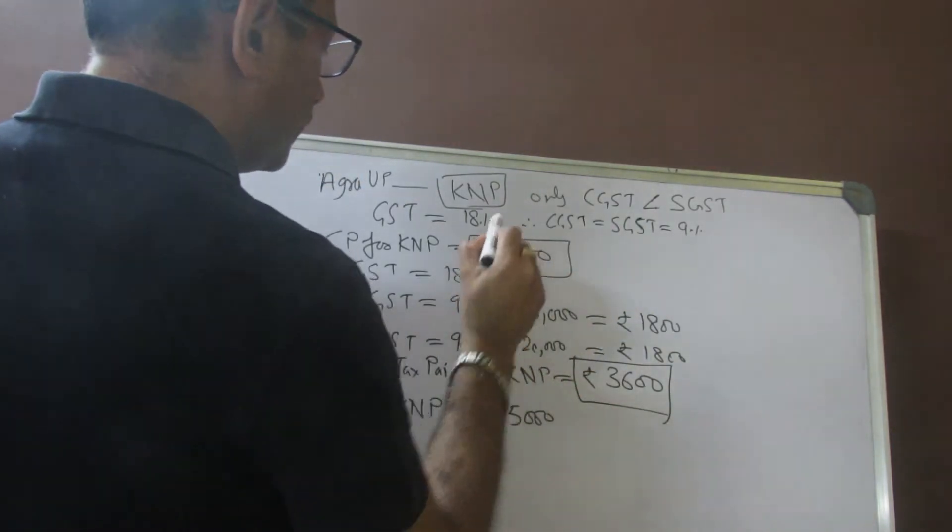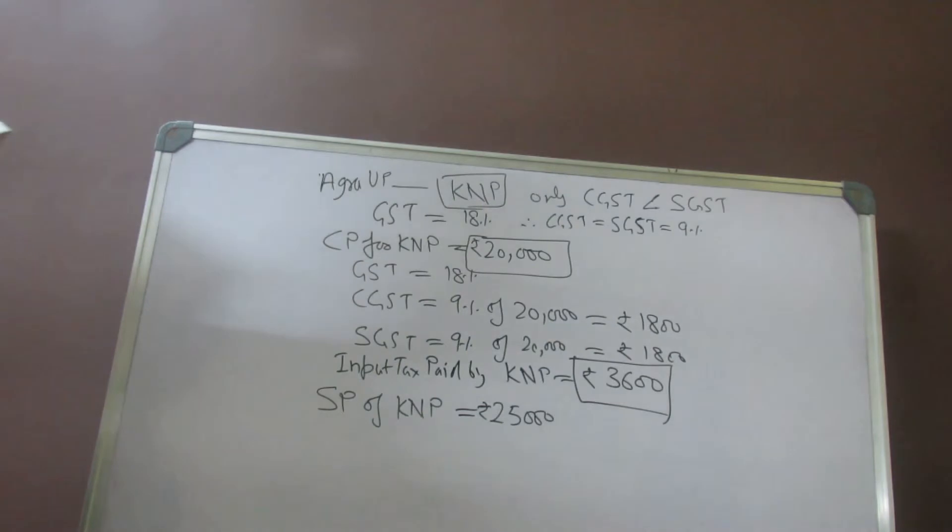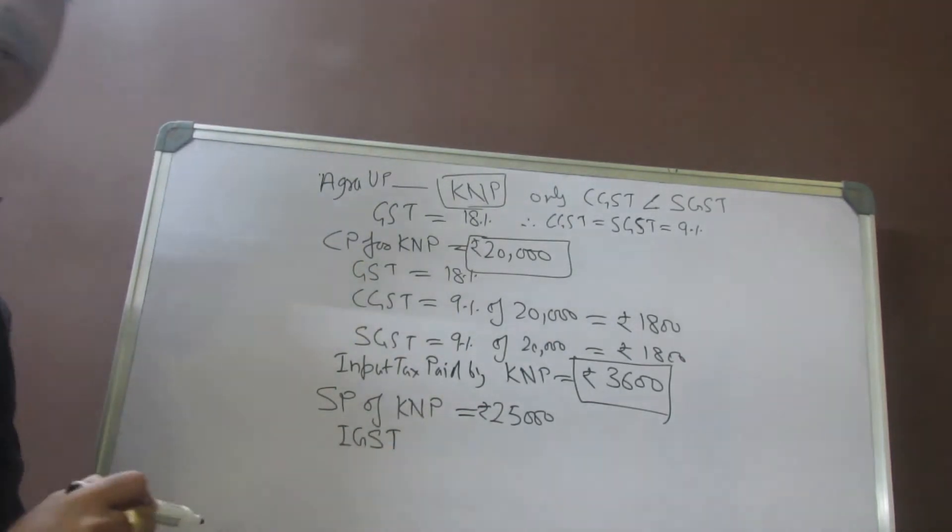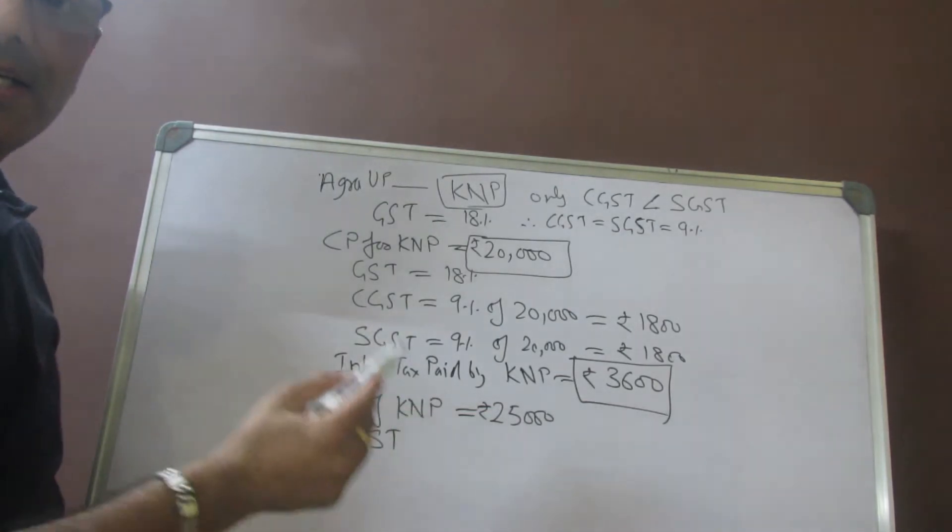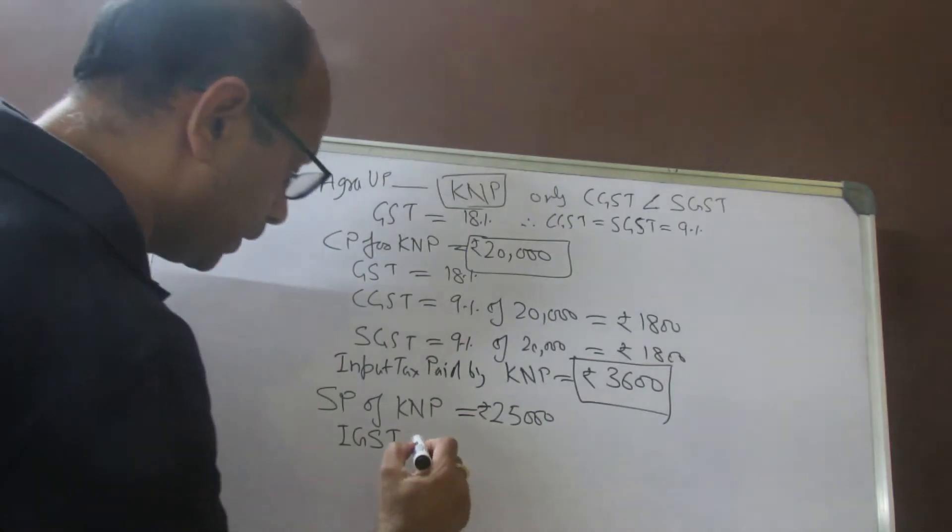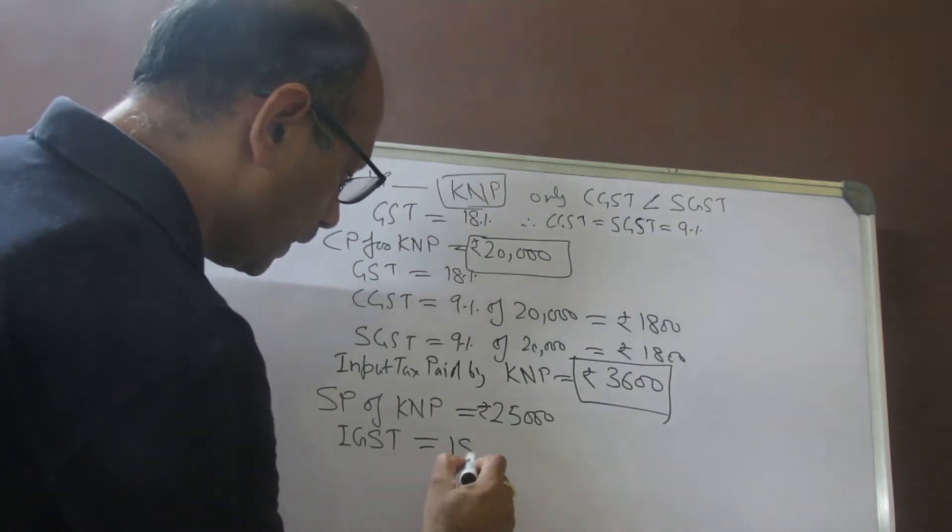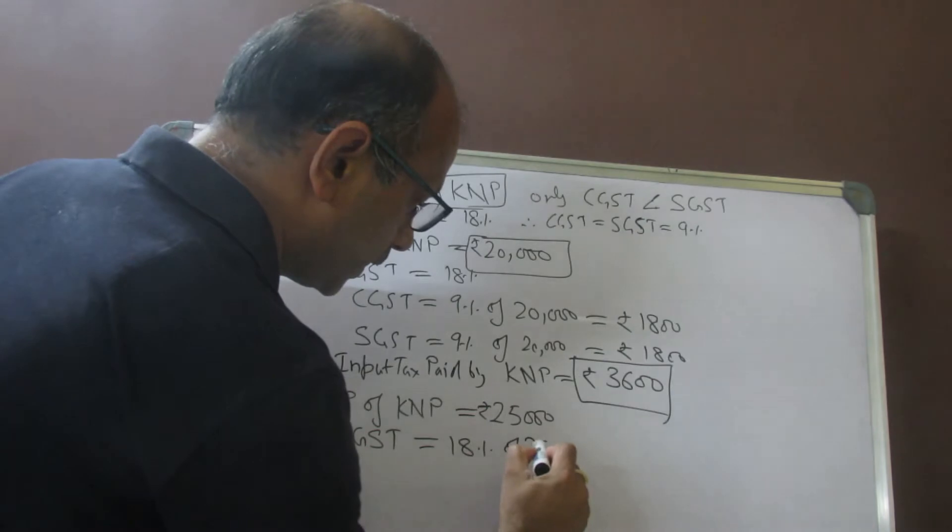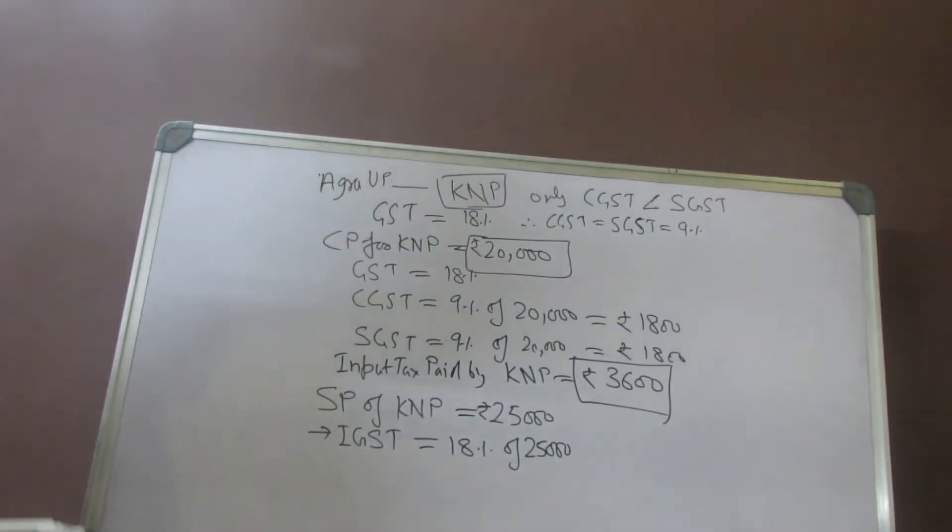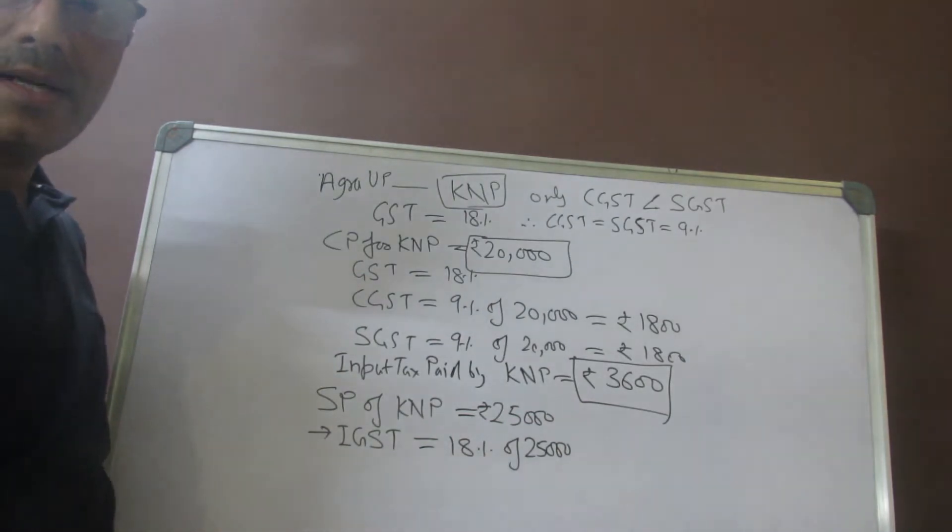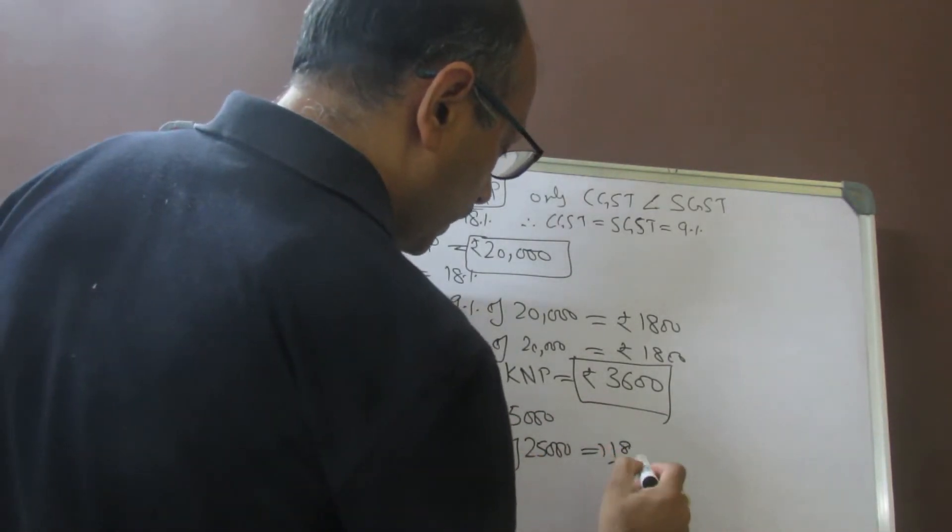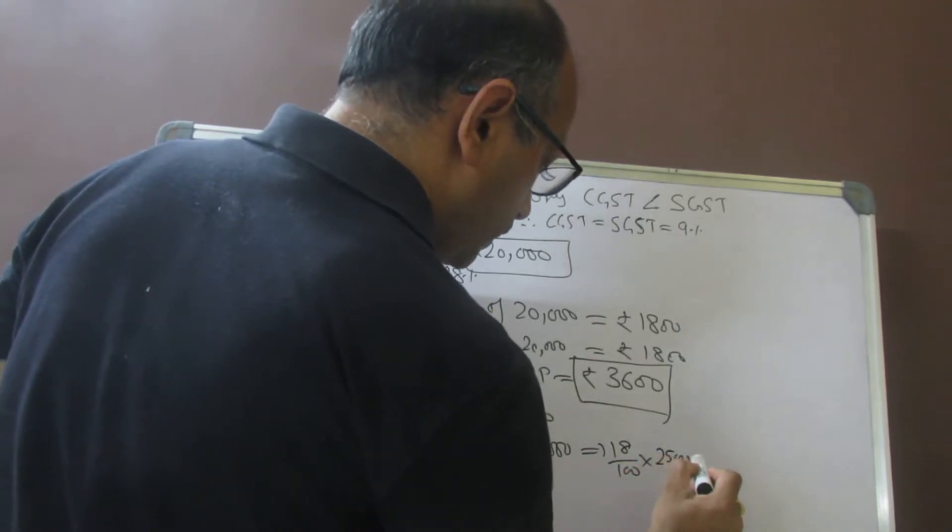What is the tax which this dealer will collect from the dealer in Jaipur? He is going to collect 18% of 25,000 under IGST, because in interstate transfer, only IGST is applicable. So you have 18 by 100 into 25,000.